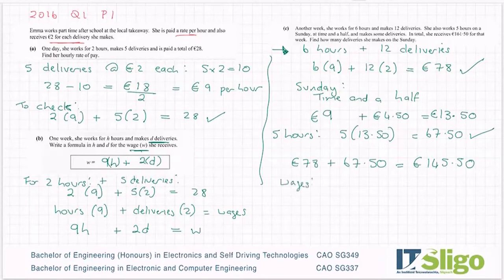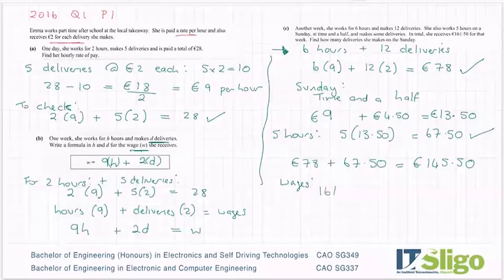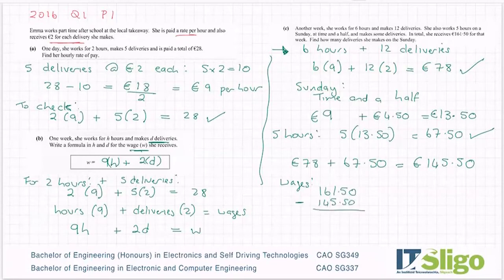Now what did she receive? So her wages were 161.50. And if I subtract from that 145.50, so 161.50 minus my answer in the last one, I'm getting 16 euros of a difference there. And you know that she gets two euros per delivery, and it didn't say anything about her getting extra for deliveries on a Sunday. So if I divide that by two, that must mean she did eight deliveries.